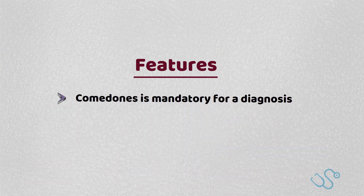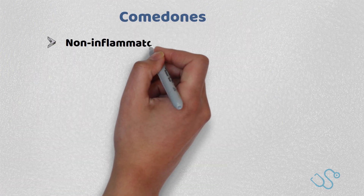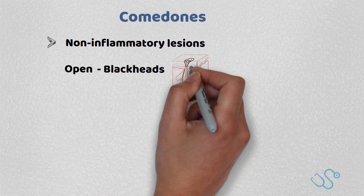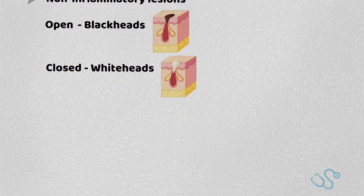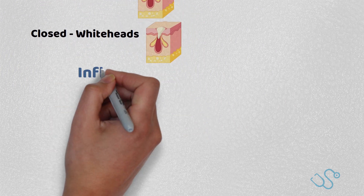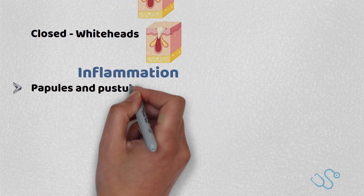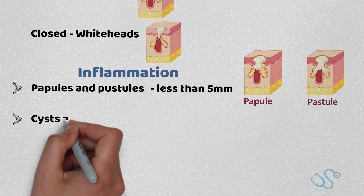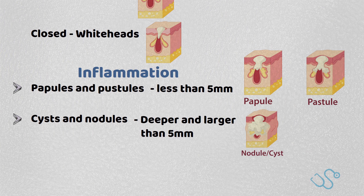Without comedones, an alternative diagnosis should be sought. Comedones are in essence non-inflammatory lesions. If they're open comedones, they're known as blackheads, and if they're closed, they're known as whiteheads. Patients also have inflammation, which presents as papules and pustules, which are usually less than 5 mm, and cysts and nodules, which are deeper and larger than 5 mm.